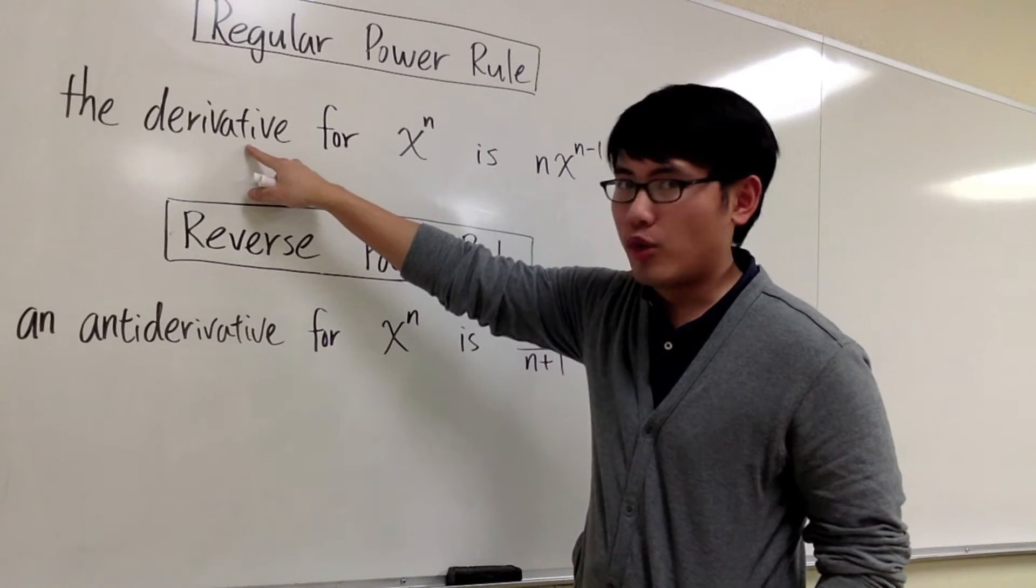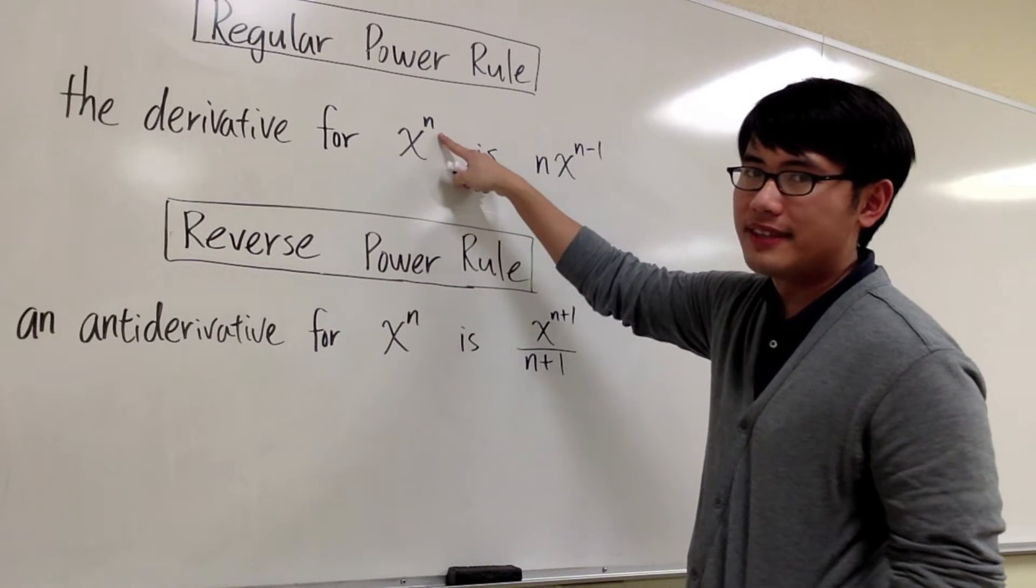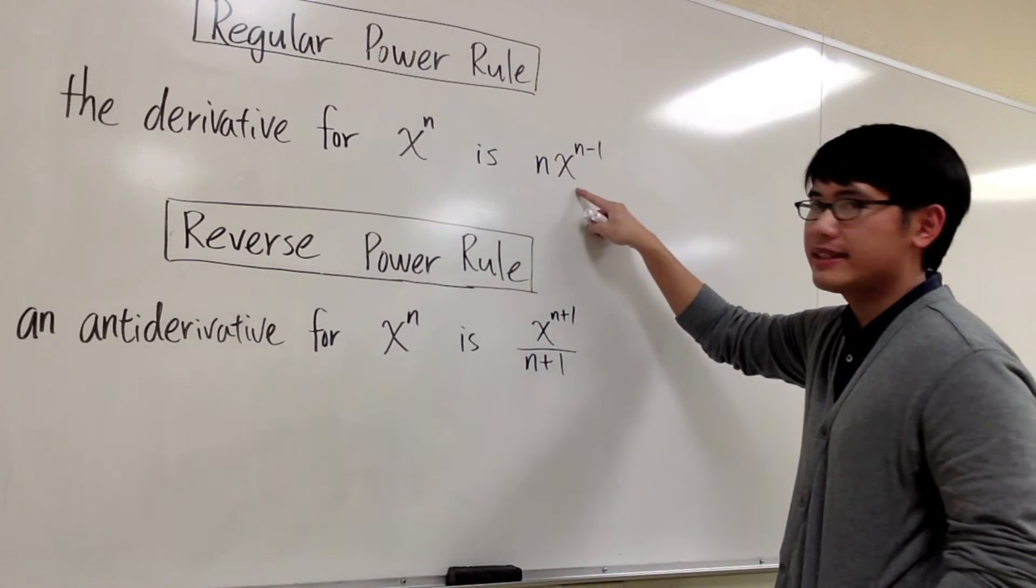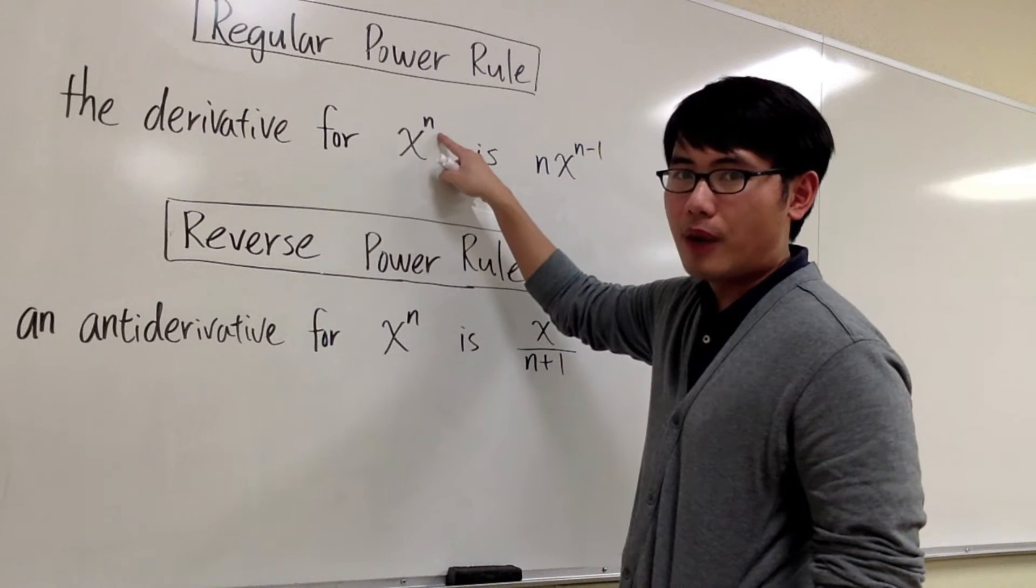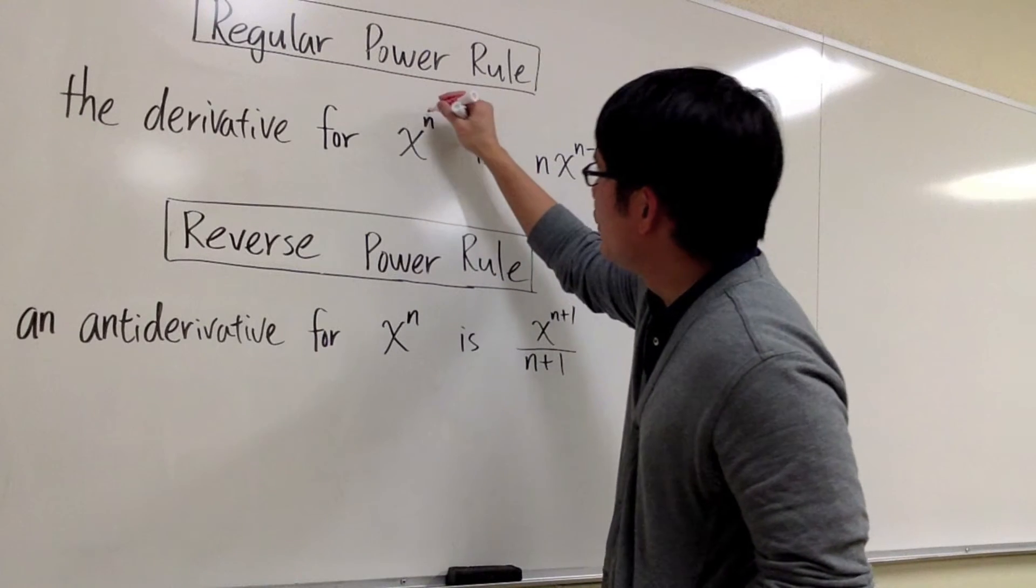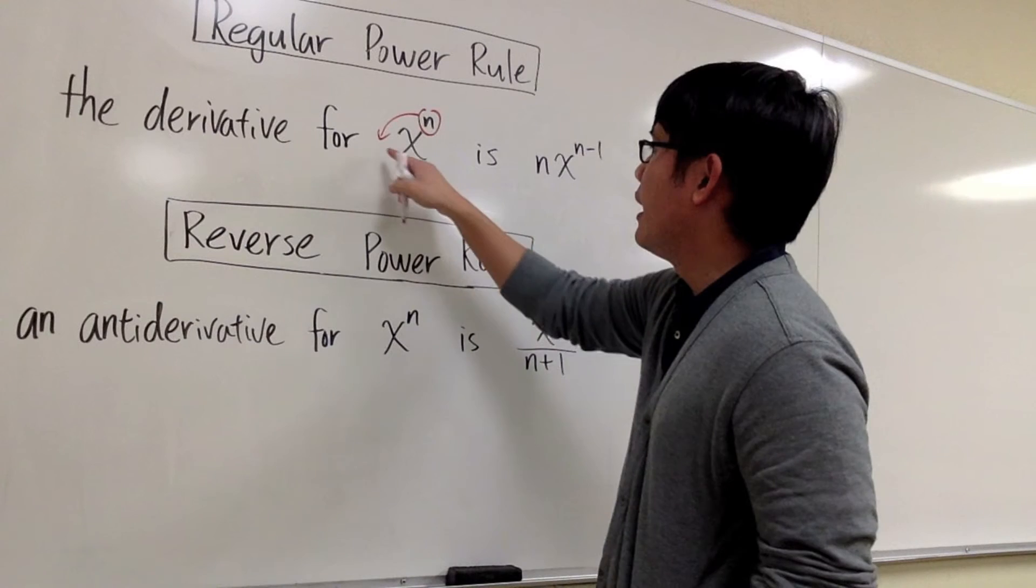It says that to find the derivative of the function in the form of x to the n power, we know the answer is going to be n times x to the n minus 1. How do we get this? We look at x to the n power. What we do first is that we take the power, we bring that to the front. That's the first step, and that's how we get the n.